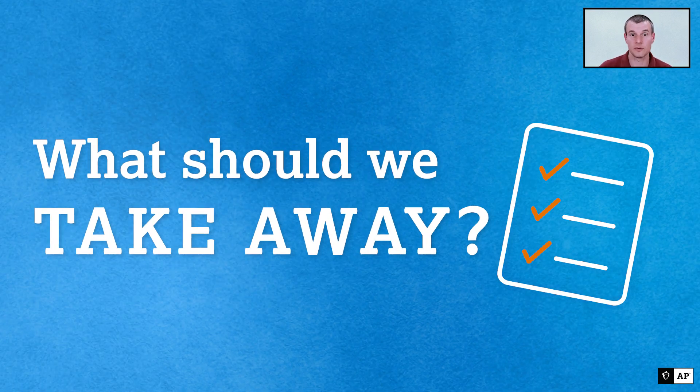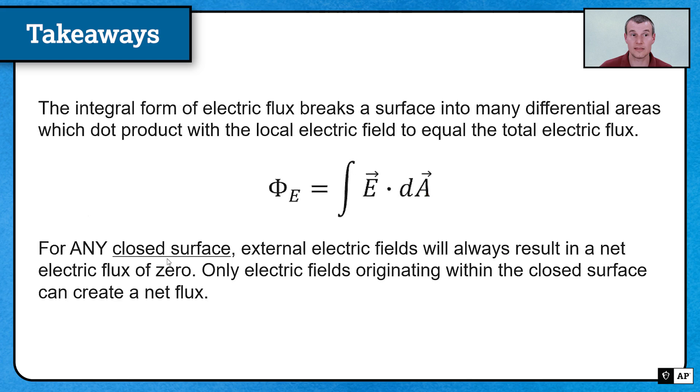So what should we take away from this particular video? Probably one of the biggest things is that the integral form of electric flux is just a sum of all these differential area elements that have different angles. And conceptually, you understand what that means. But mathematically, we're going to solve much simpler cases. Also, for any closed surface, only the external electric fields that we just talked about are going to generate a flux. If ever it's inside of the object, that's going to be what results in net flux out of the surface.